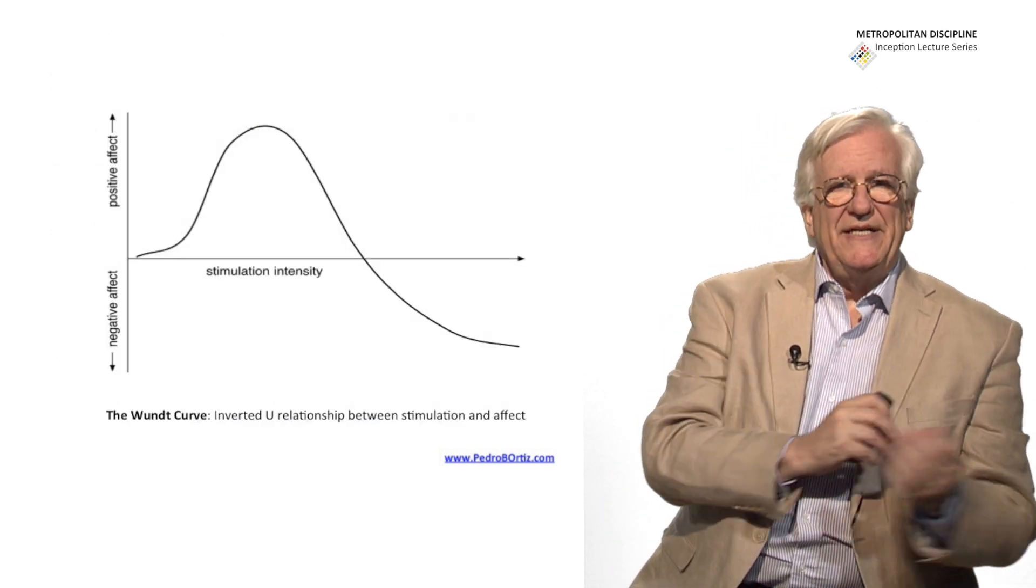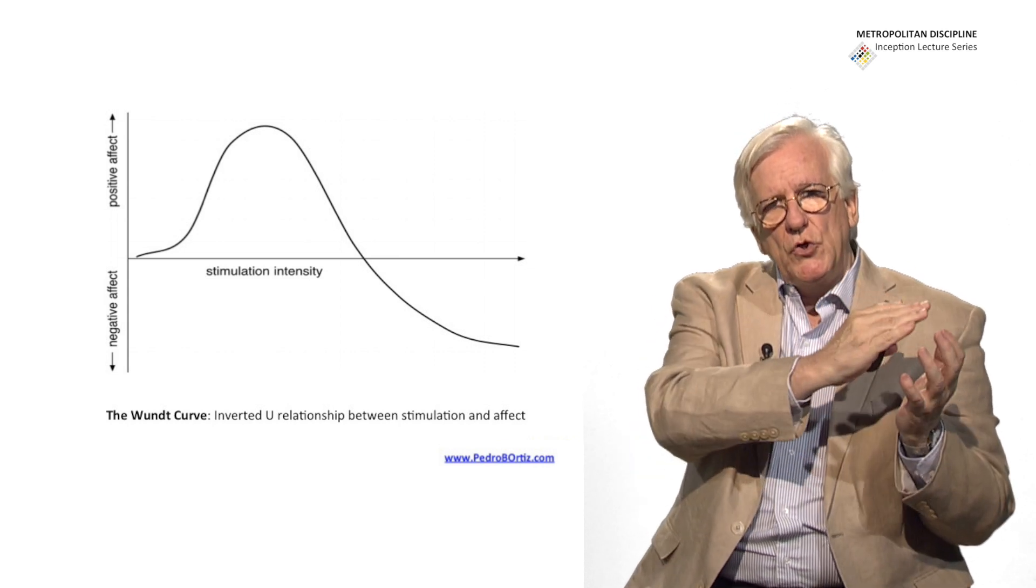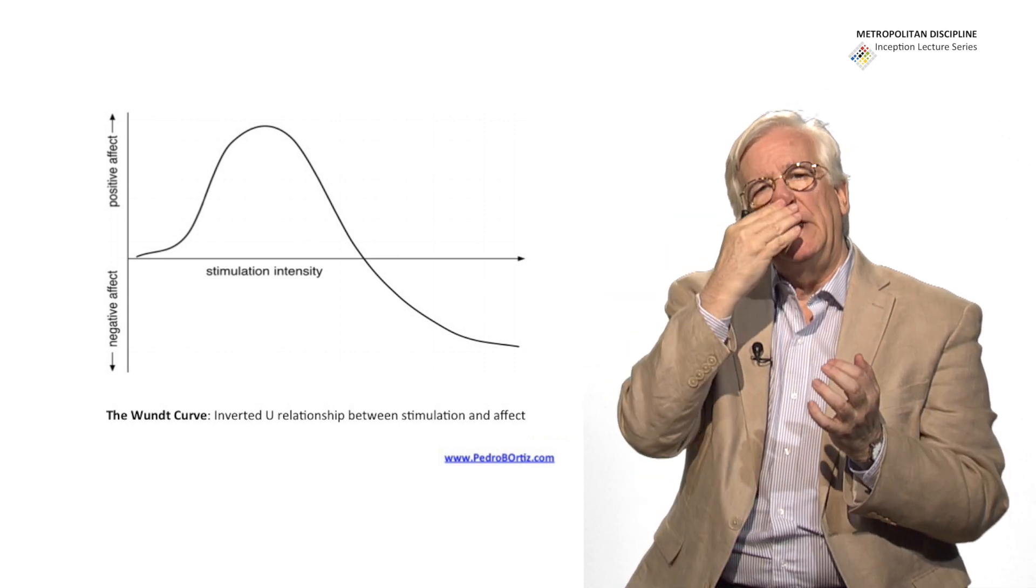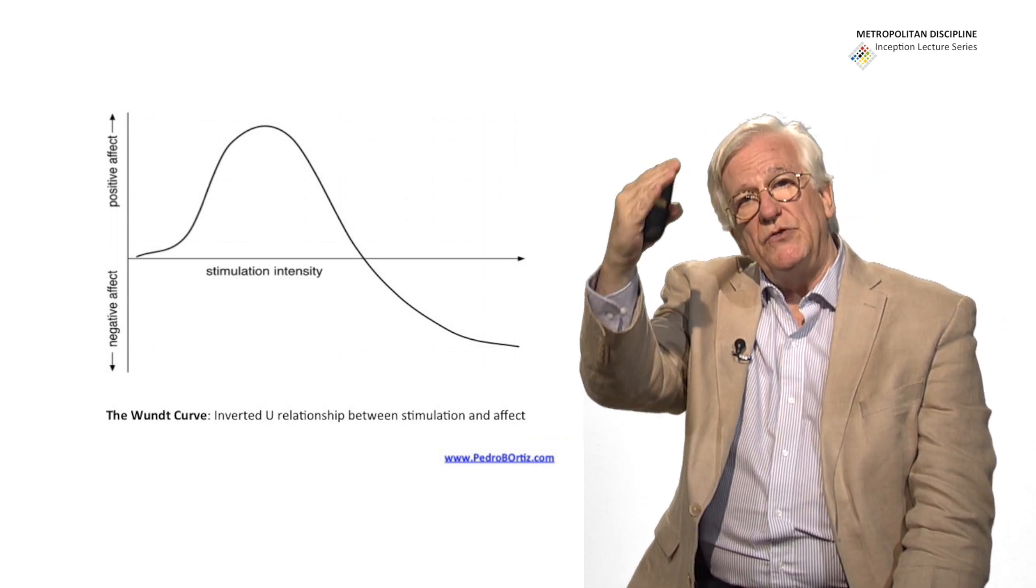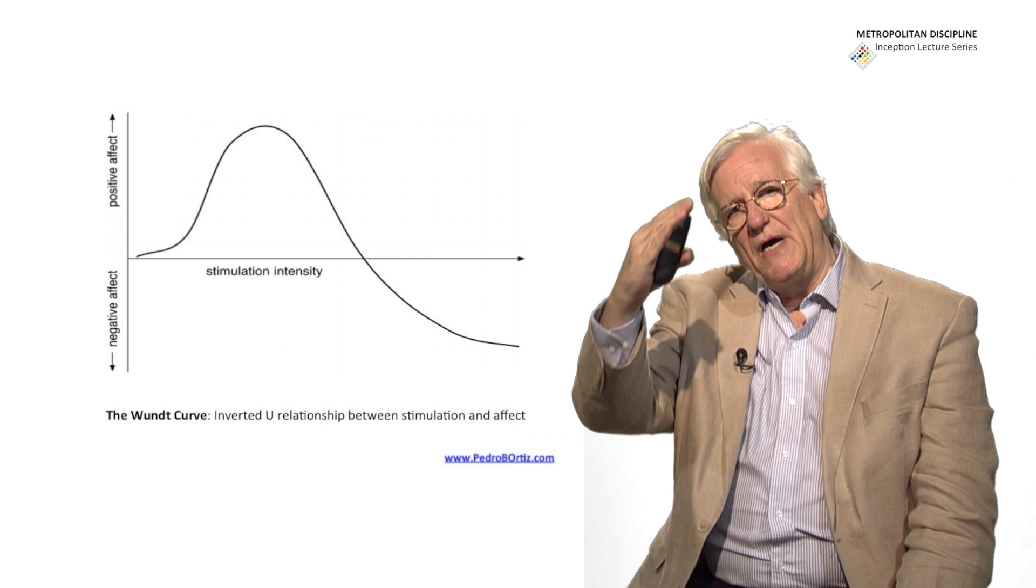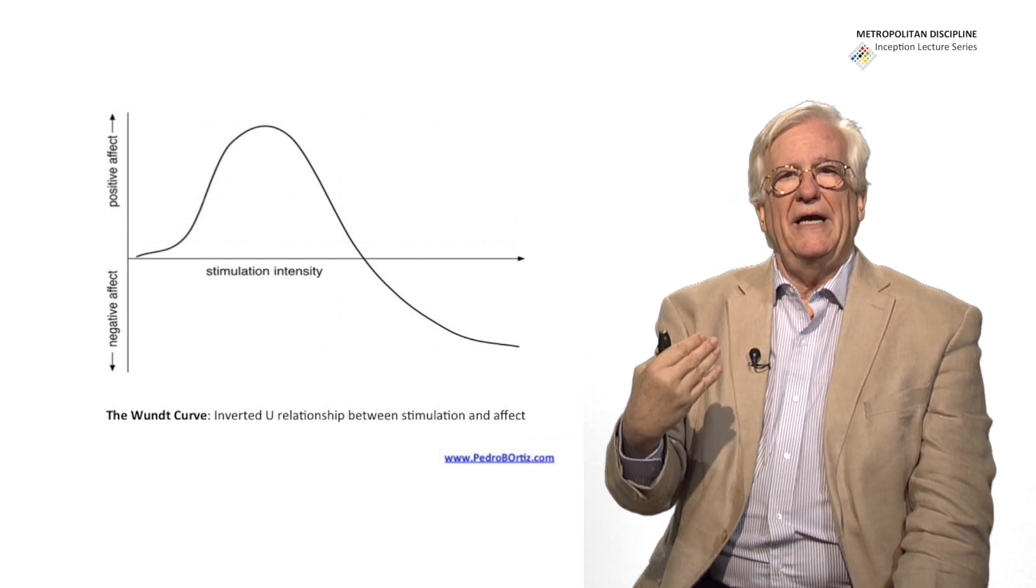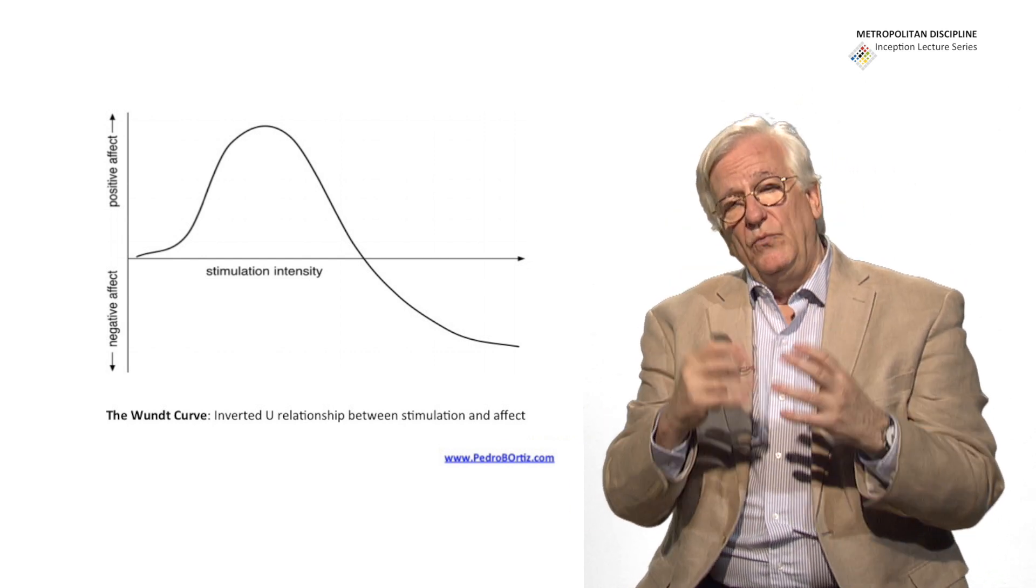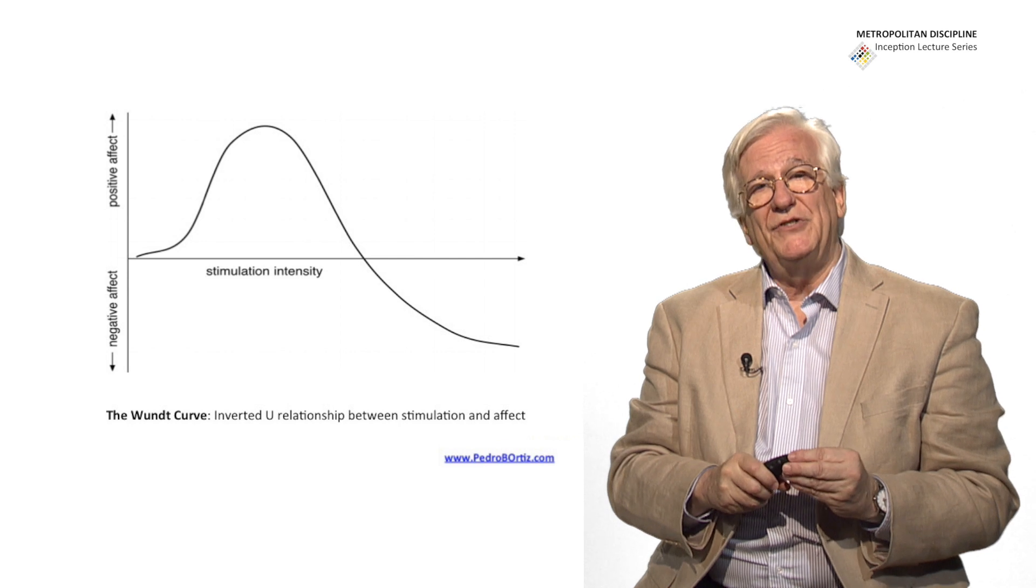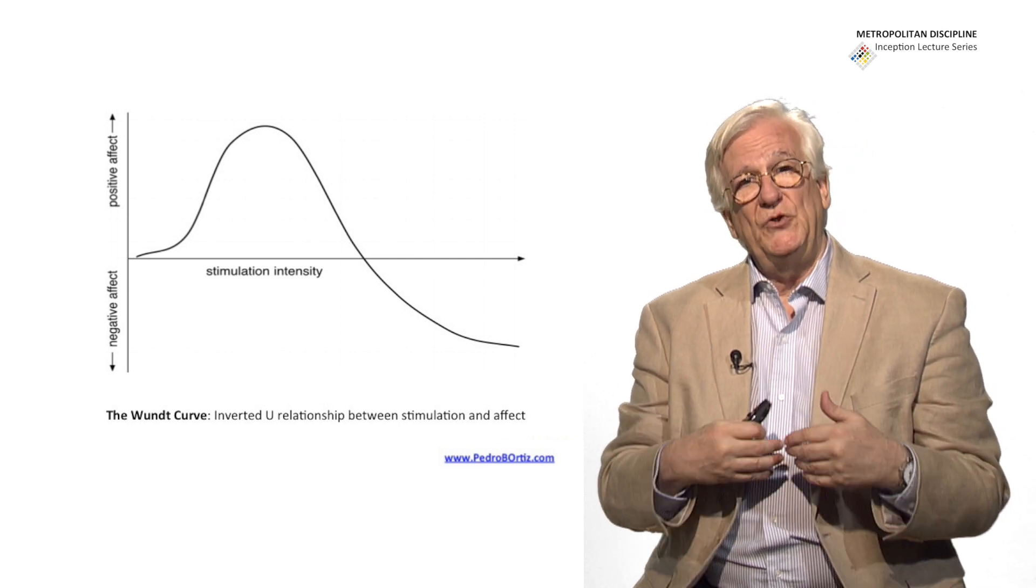Then there is another curve we have seen in another presentation, which is the wound curve. You grow, you grow to a top of an efficiency, and then there is a moment you start not to be so efficient. You come down, and then you really get into a gridlock, and you die, or you really go to a zero.